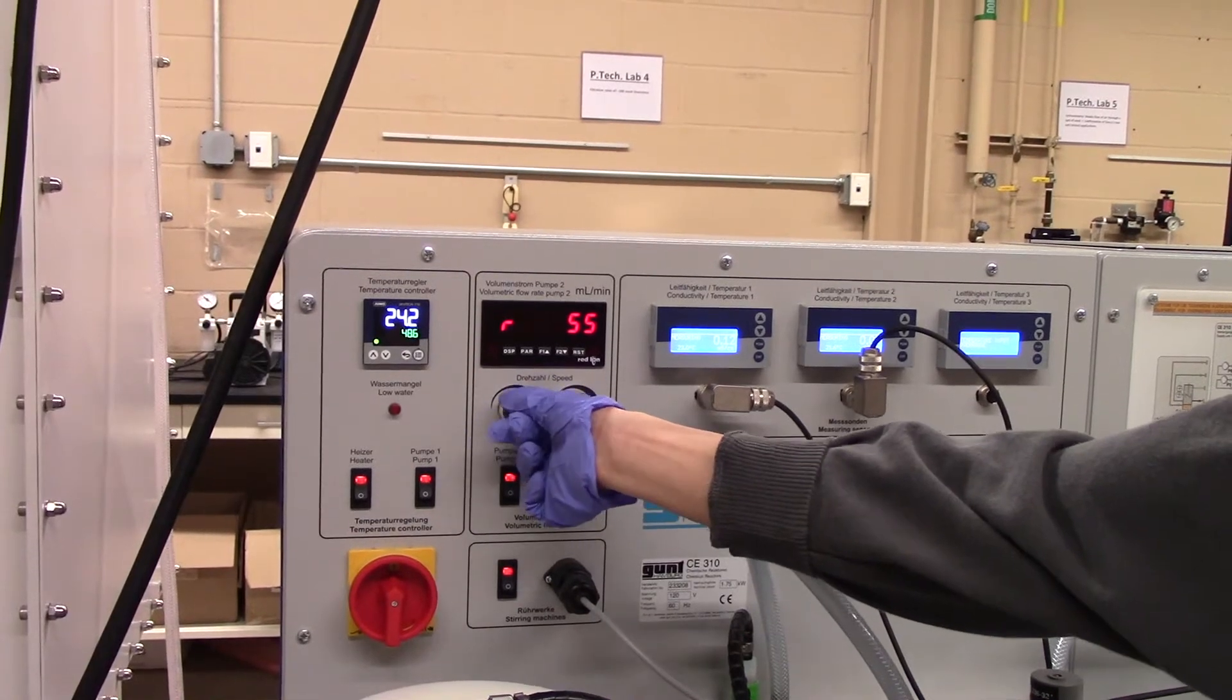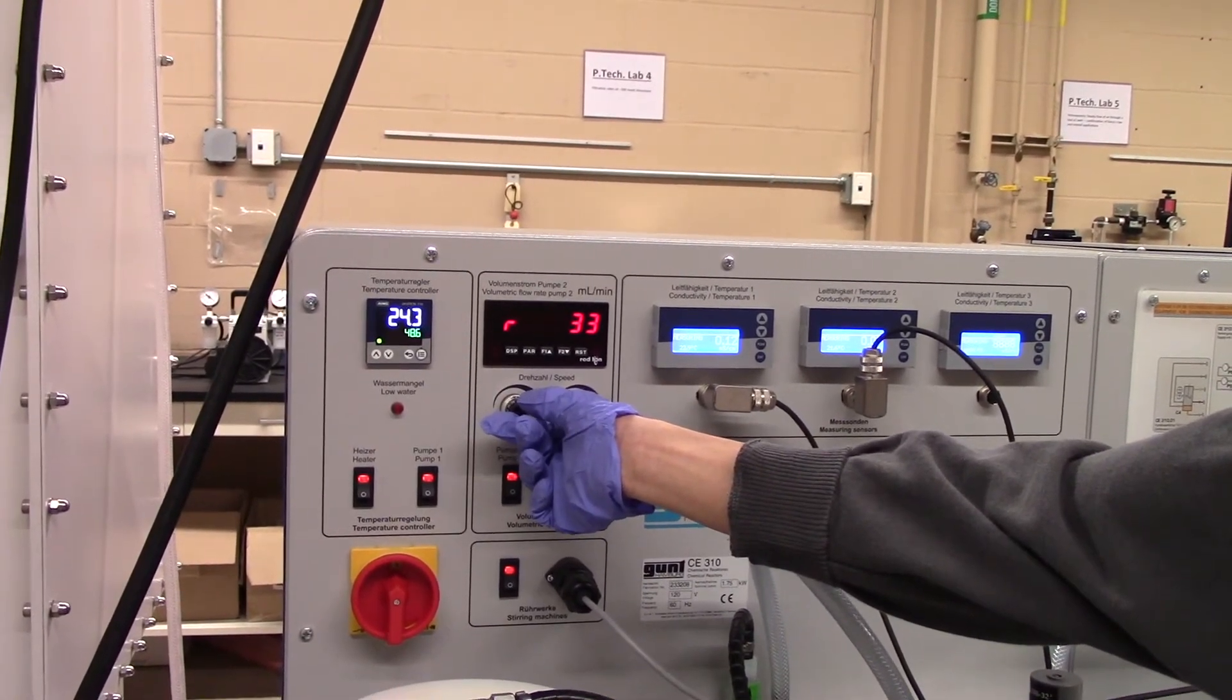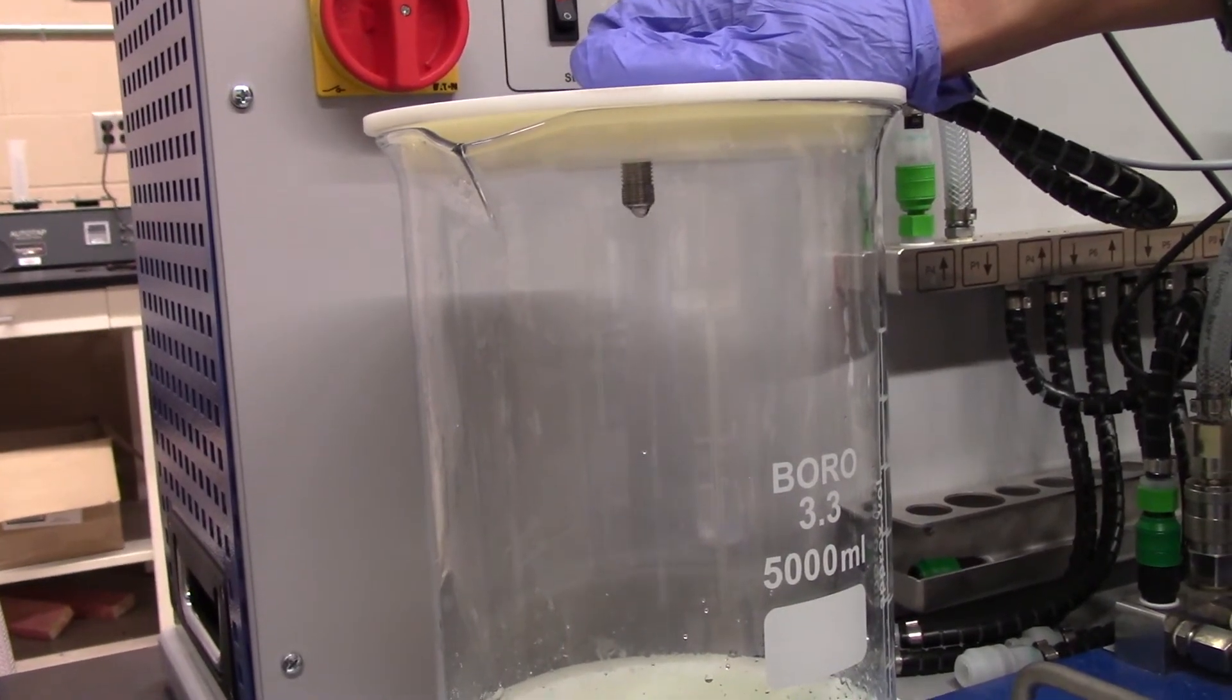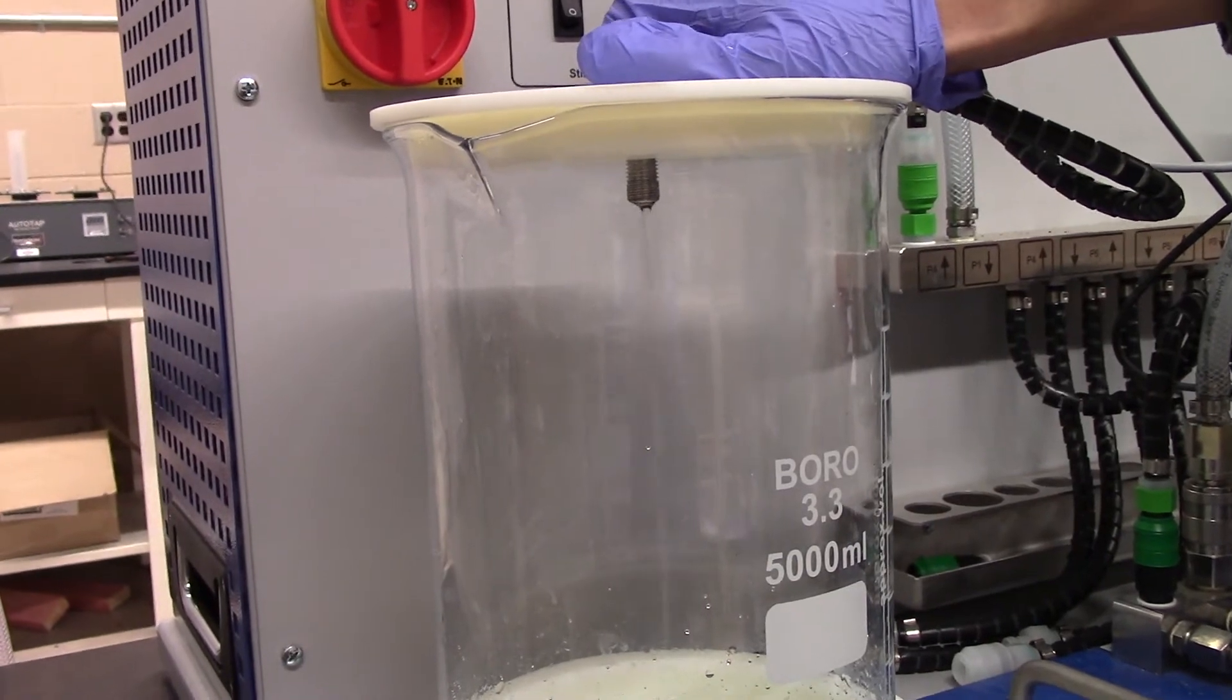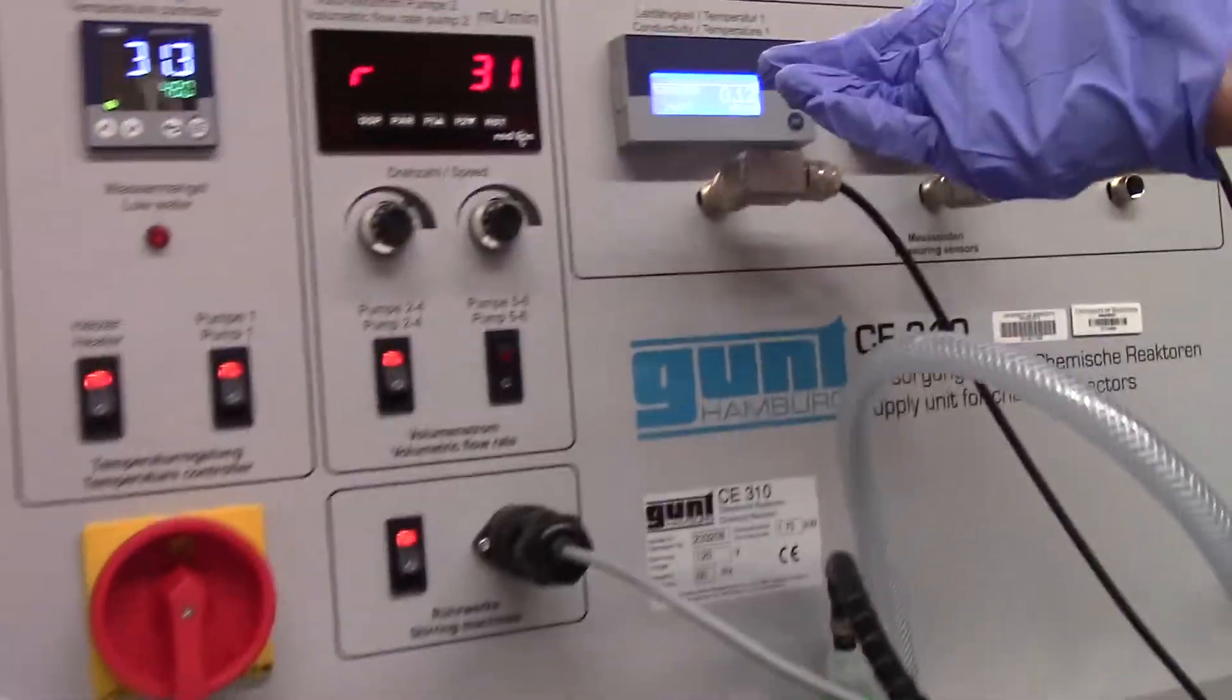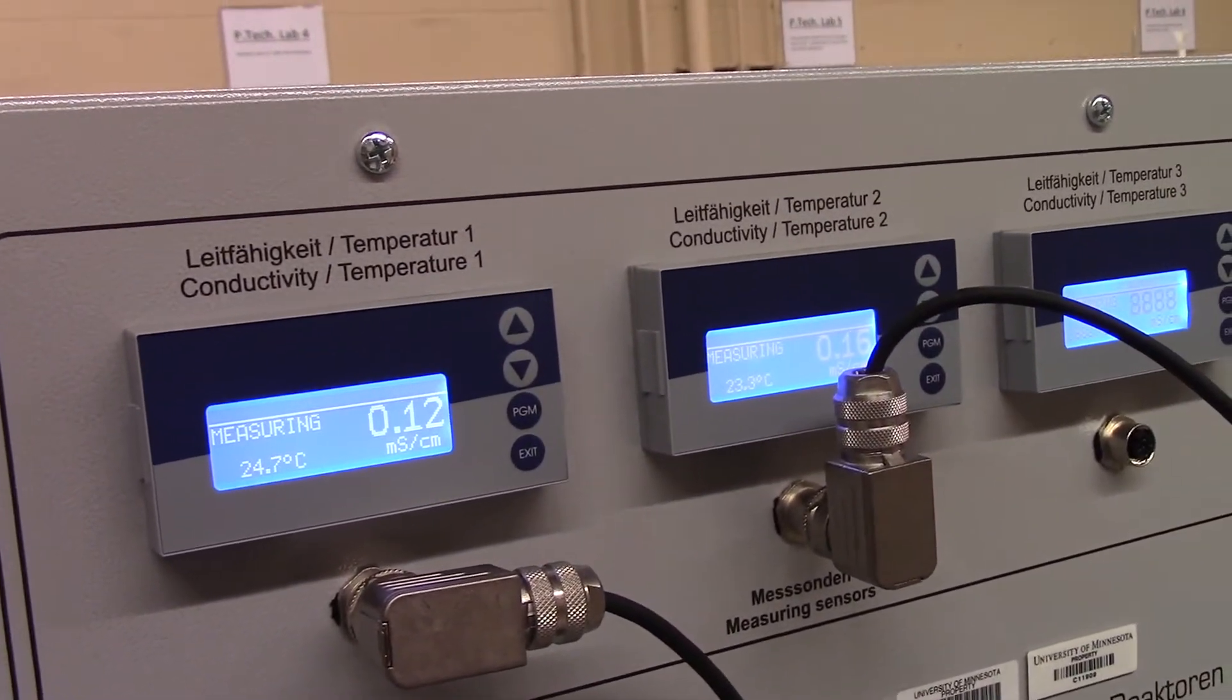Once this is complete, use the flow rate dial to set your desired flow rate, starting with 30 milliliters per minute. When you begin to see product flowing out of your product's tank, you must begin manually recording your conductivity, time, and temperature values in intervals of 2 to 5 minutes until your conductivity readings reach steady state.